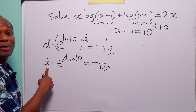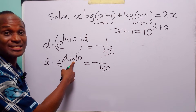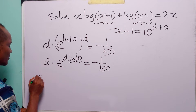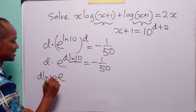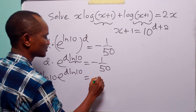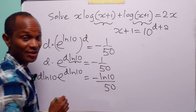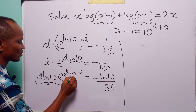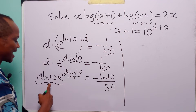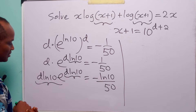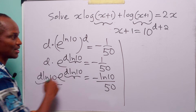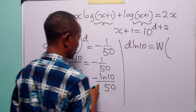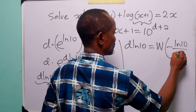To make what we have before e the same as what appears in the exponent of e, we multiply both sides by ln 10. When we do that, we have d ln 10 times e to the power d ln 10, equal to minus ln 10 divided by 50. Now that the coefficient before e matches the exponent, we can apply the Lambert W function to both sides. This gives us d ln 10 equals W of minus ln 10 over 50.